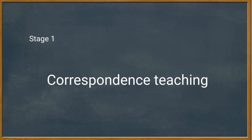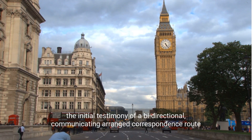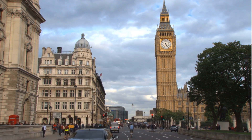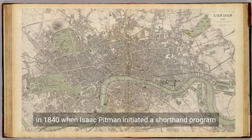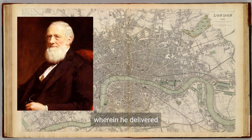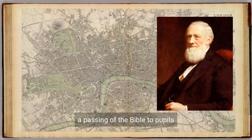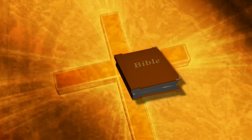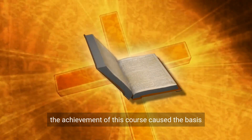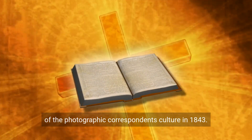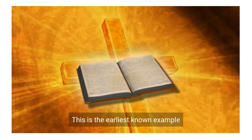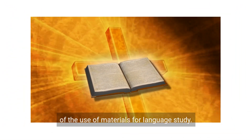Stage 1: Correspondence Teaching. The initial testimony of a bi-directional communicating arranged correspondence route comes from England. In 1840, when Isaac Pittman initiated a shorthand program wherein he delivered a passage of the Bible to pupils who would send it back as a complete transcription. The achievement of this course caused the basis of the phonographic correspondence culture in 1843. This is the earliest known example of the use of materials for language study.